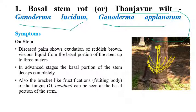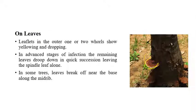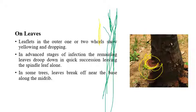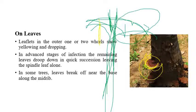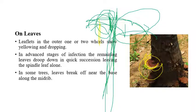The fructification of Ganoderma lucidum is clearly visible on affected plants. Regarding leaf symptoms, a very important diagnostic characteristic is that all leaves drop down very quickly except the spindle leaf, which remains alone. Before dropping, the leaves slowly turn yellow, then fall — except the spindle leaf. This retention of only the spindle leaf is the characteristic diagnostic feature.